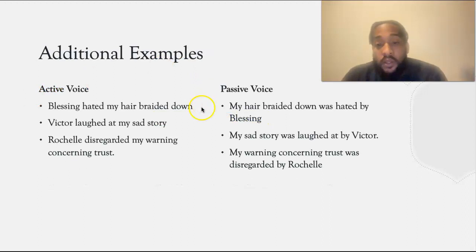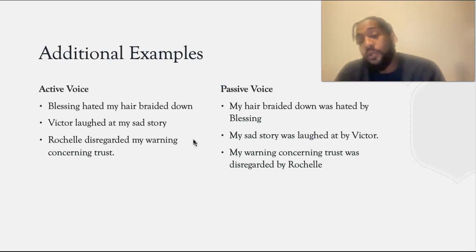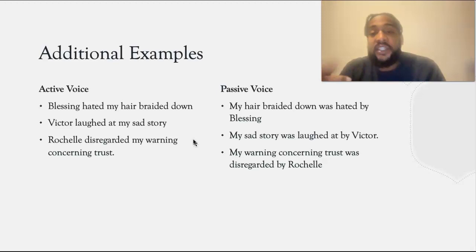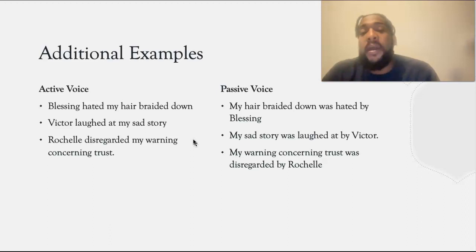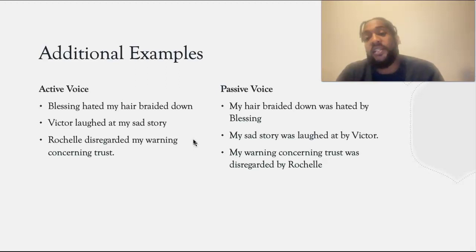Now, to explain this further, I have some additional examples of active voice versus passive voice. An example of an active voice sentence is: Blessing hated my hair braided down. In this example, you can see that the subject, Blessing, is performing the action of hating my hair braided down. But that, in passive voice, would have been: my hair braided down was hated by Blessing. Here the subject, hair, is receiving the action of being hated by Blessing.